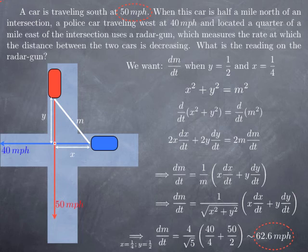You see that the actual speed of the car is only 50 miles per hour, and the reading on the radar gun is 62.6 miles per hour, which looks like a big distortion. So why is the reading so far off?